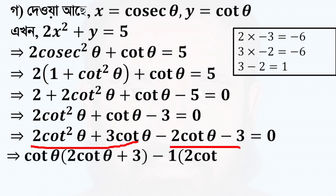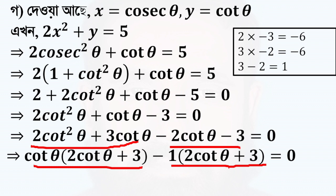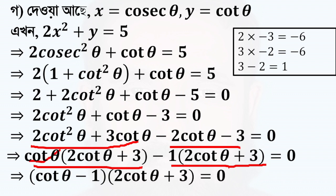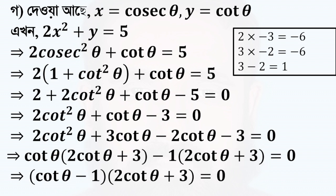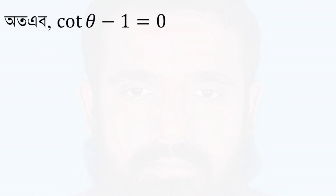We get 4 theta plus 3, then 2 times 4 theta plus 3. The equation equals to 0. The squared term minus 1 equals 0, which gives the result equal to 1.